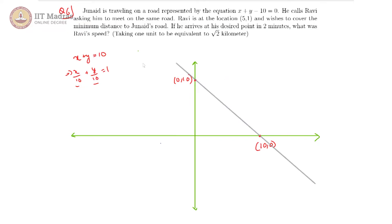This is the line that Junaid is traveling on. And he calls Ravi asking him to meet on the same road. But Ravi is at this point.